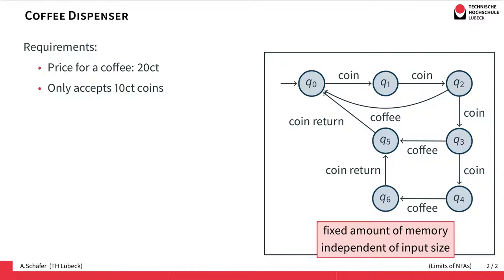The only way to memorize things for finite automata is in the states. For each new coin that is inserted, we would need an additional state to memorize it, and at some point the state space would be exhausted, because it has to be defined beforehand before actually knowing the user input.